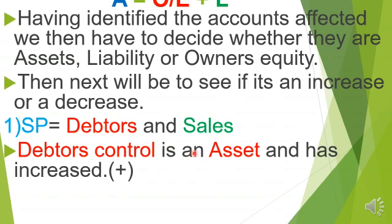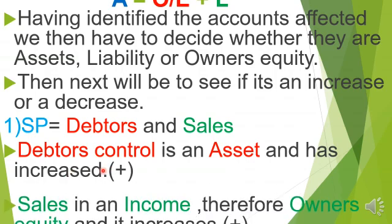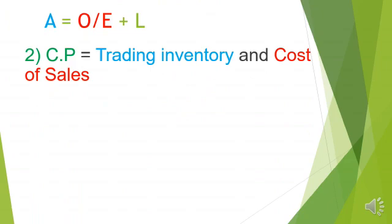Assets have increased for Debtors' Control. For Sales — Sales is an income. On the accounting equation we only have Assets, Owner's Equity, and Liabilities, so income falls under Owner's Equity. Therefore, Sales being an income means Owner's Equity increases with regards to the selling price.